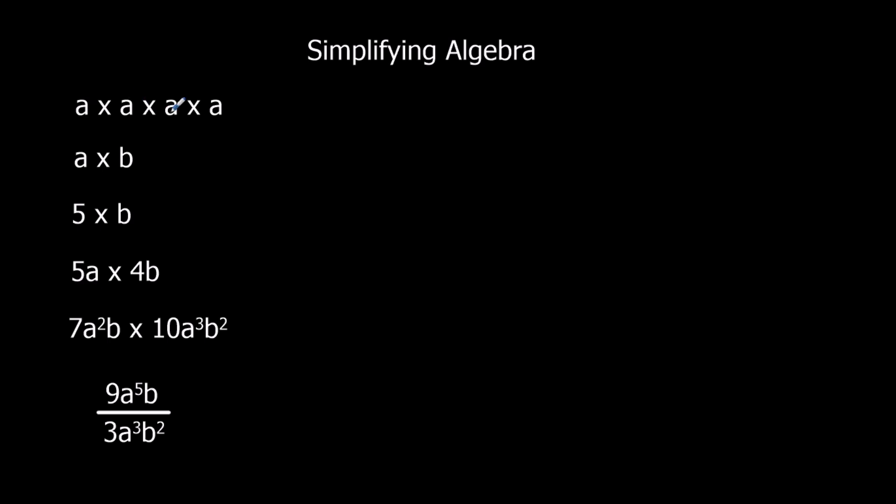So here I've got four a's times together, so I can write that as a to the power of 4. If I had three b's times together, I could write it as b to the power of 3.